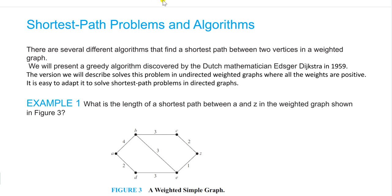What do we mean by shortest path? The name itself tells us — 'shortest' means small, and 'path' is nothing but a way or distance.